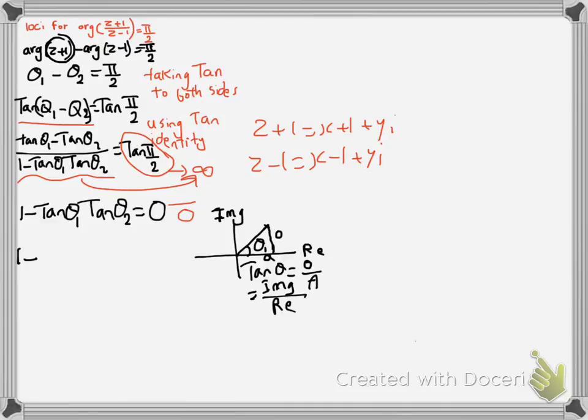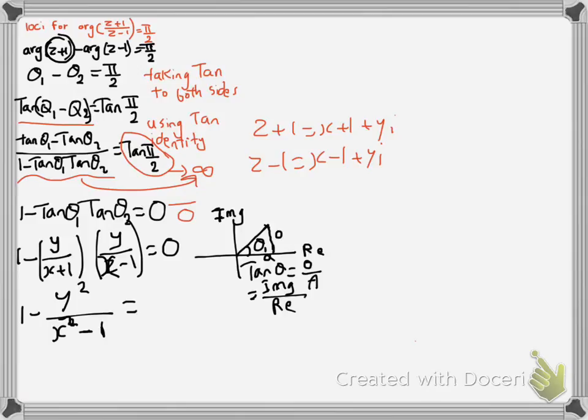Now we'll substitute that in here. So we will have the first one is imaginary over real, so it's y over x plus one. The next one will be y over x minus one, and that gives me zero. Now just times, so you'll have one minus y square over x square minus one equal zero. Just taking the one to the other side, so you will have one equal y square over x square minus one.